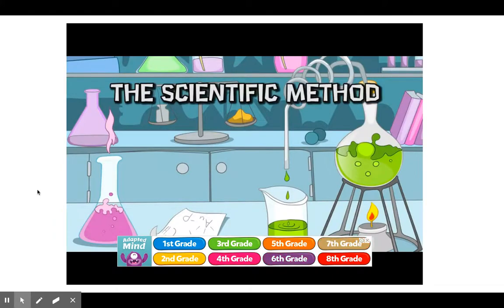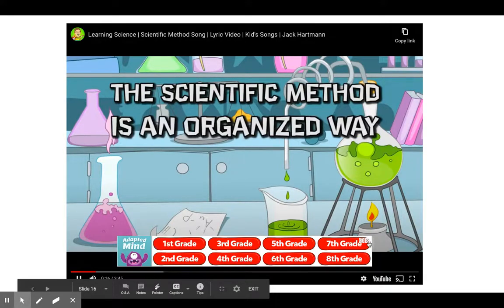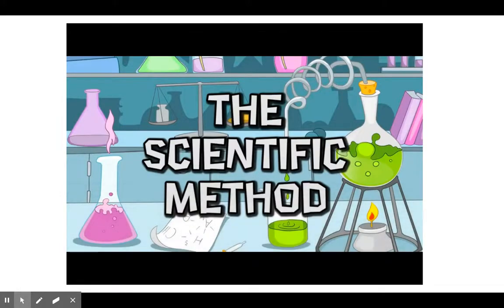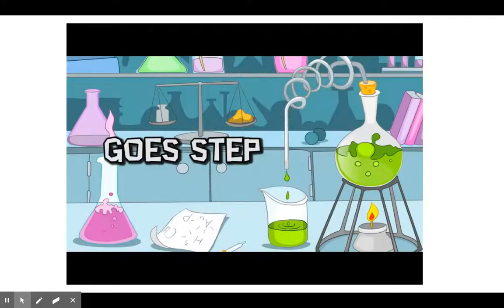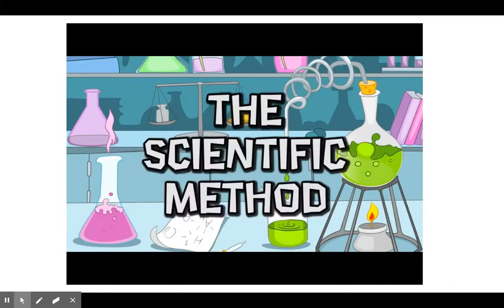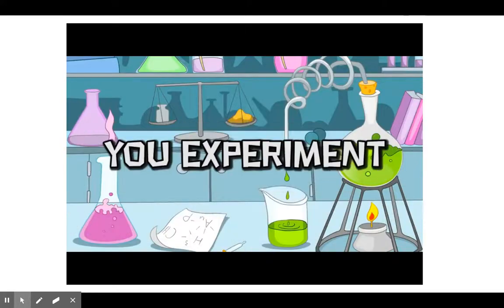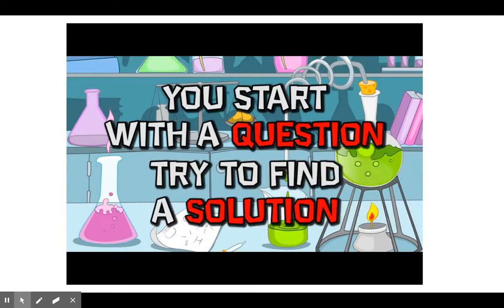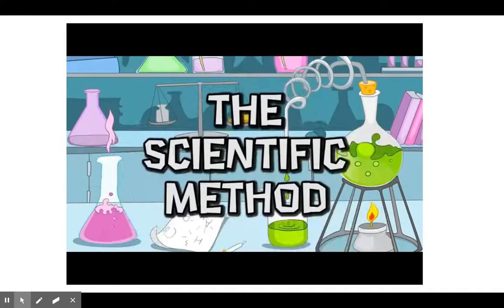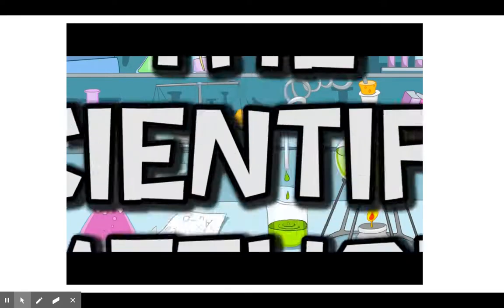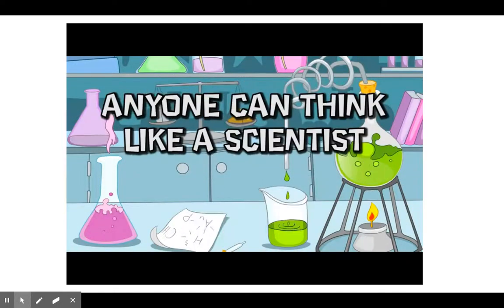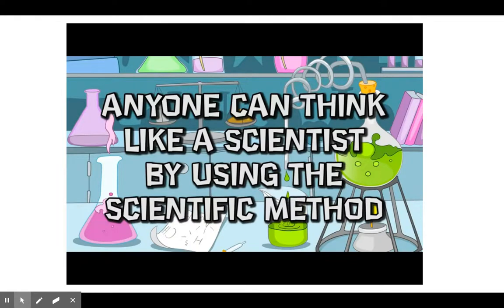The scientific method is an organized way to answer questions and solve problems. The scientific method — go step by step. The scientific method — you experiment. You start with a question, try to find a solution. This is how you do it. Anyone can think like a scientist by using the scientific method.